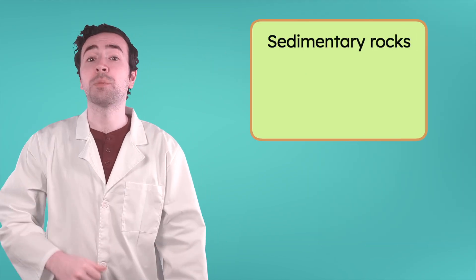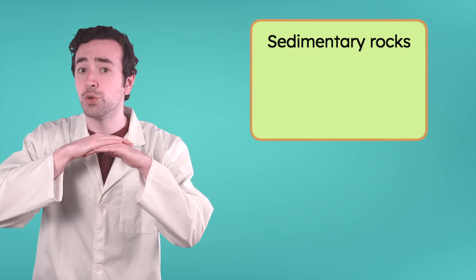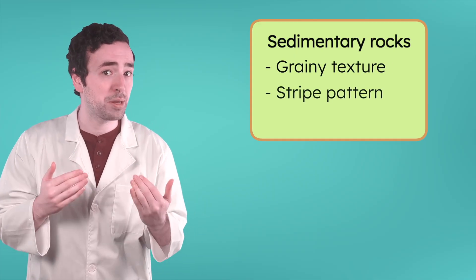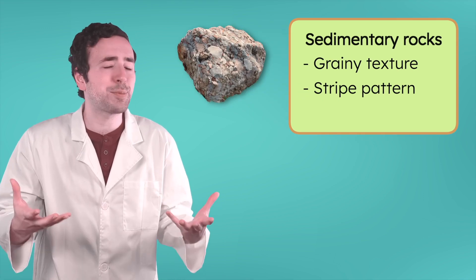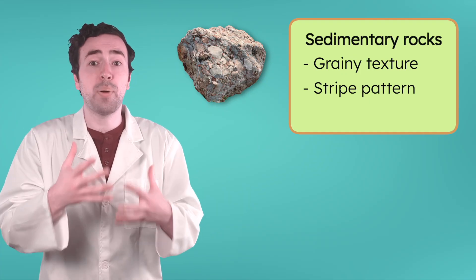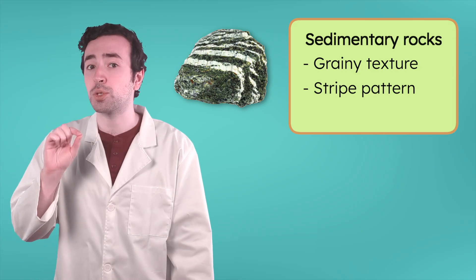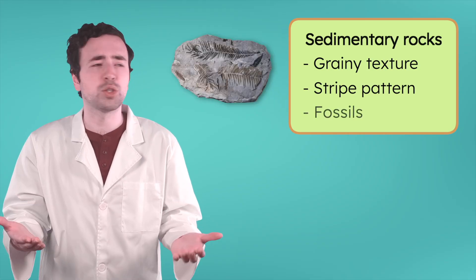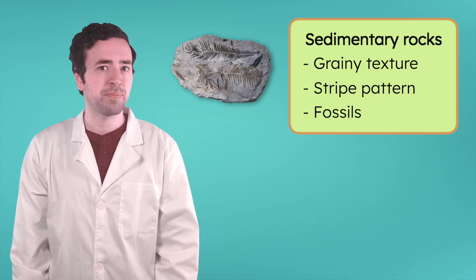Sedimentary rocks, on the other hand, form from layers of sediment. Over time, these layers get pressed together until they harden into rock. This process of compaction can create rocks with a grainy texture or a striped pattern. Some sedimentary rocks, like conglomerate, are made of lots of different sized pieces of rock and minerals stuck together, giving them a bumpy or uneven texture. Others, like zebra rock, can have clear stripes or layers that show how the sediments were deposited over time. Some sedimentary rocks even contain fossils from ancient plants or animals that became part of the rock as the layers hardened. All of these properties can help scientists recognize sedimentary rocks.